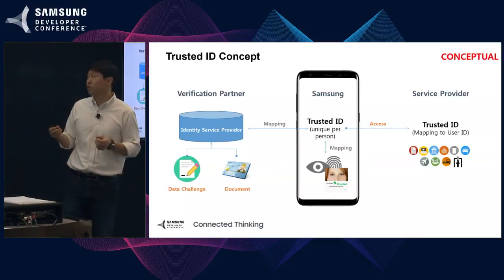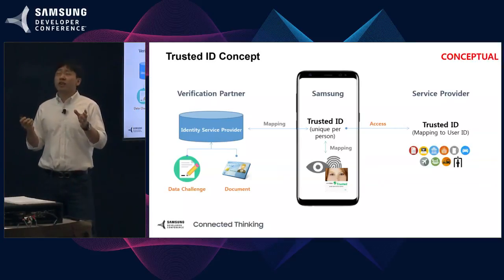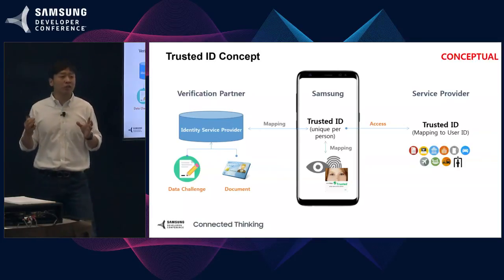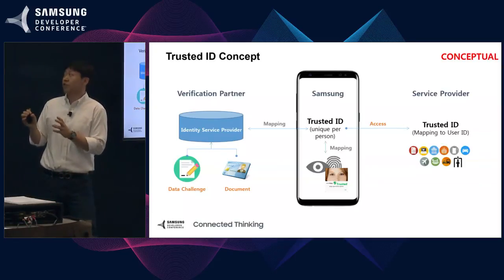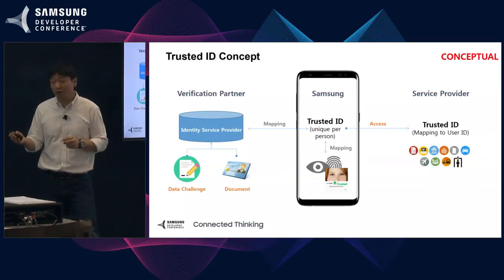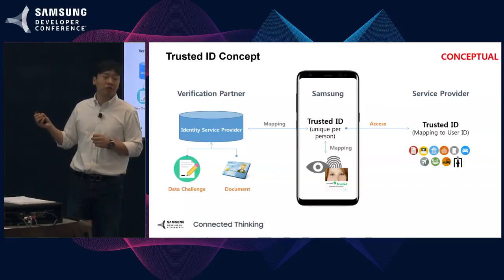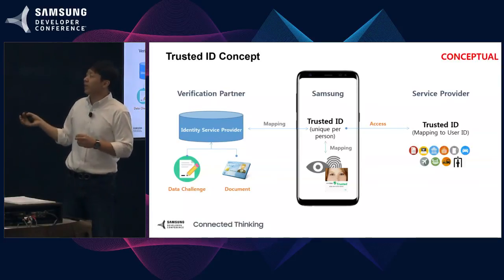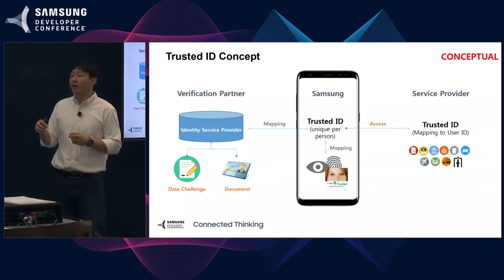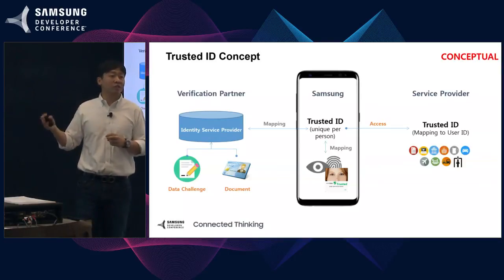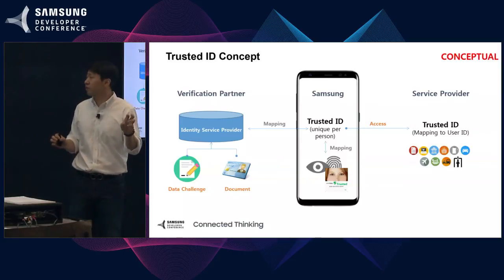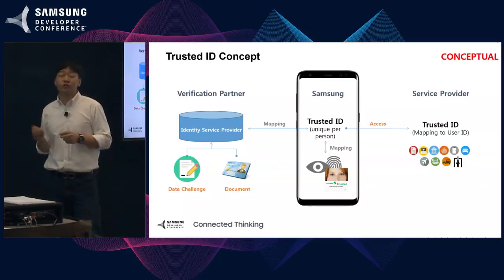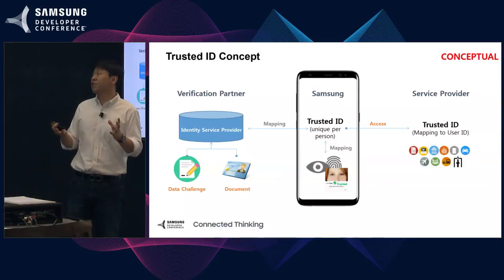Service providers can take that data and use it for signing up for a new service or identifying the user for multiple purposes. One use case that could be really interesting is instant credit card provisioning. You verify a user's identity, then leverage verified user data to apply instantly on a mobile phone for a credit card. Once the credit card issuer processes the information and approves the application, the credit card gets instantly provisioned on the phone. And if you take it even a step further, you could put that onto Samsung Pay so you can use it instantly. End to end, everything starts and ends on the mobile phone — you apply, get issued, and use it instantly.